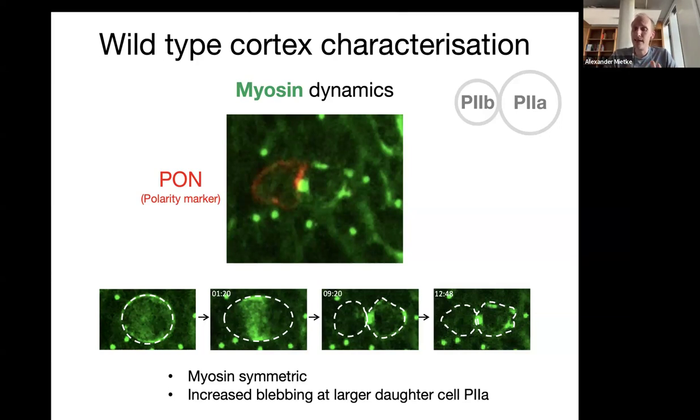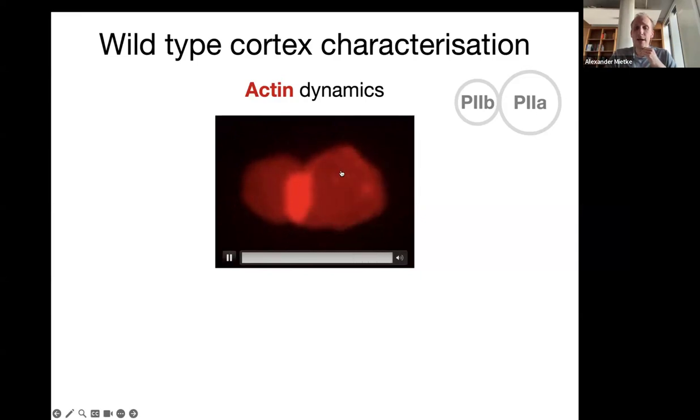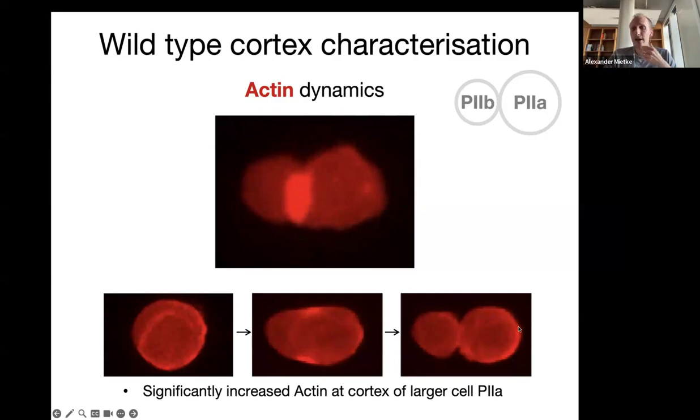What you do see is an increased blebbing of what will be the larger cell at the end. We can take this carefully, of course with a grain of salt, as an observation that we expect actually these larger cells to be under larger tension, which is something that has been associated with an increased blebbing rate. But myosin as such seems symmetric. But actually where Alicia very quickly found a very drastic asymmetry is in the actin, in the cortical actin. This is an actin labeled cell division. You see already in the dynamics that this outline here is much, much brighter than it is on this side. These are the corresponding stills. On average, in a wild type situation, this is about a fourfold intensity difference from one pole to the other.